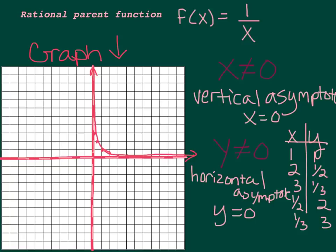Now if you plug in the negative x's: if x was negative 1, y would be 1 over negative 1, which is negative 1. Negative 2 would be negative 1 half. All of these would just be the opposites. So we have negative 1, negative 1, and negative 2, negative 1 half — it just approaches the asymptote from underneath. So we have this graph that looks like a hyperbola with two branches. You can go to y equals in your calculator, put 1 over x, and you'll see this — a hyperbola with two branches approaching x equals 0 and y equals 0 but never touching them.